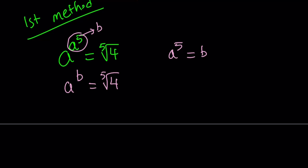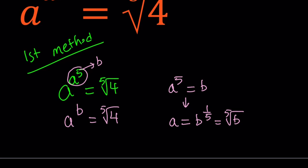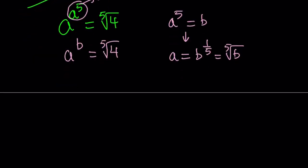From here, since a to the fifth power equals b, I can say that a can be written as b to the power one fifth or you can write it as the fifth root of b. Here a and b don't have to be positive, but the idea is at the end they're going to have to be positive anyways.